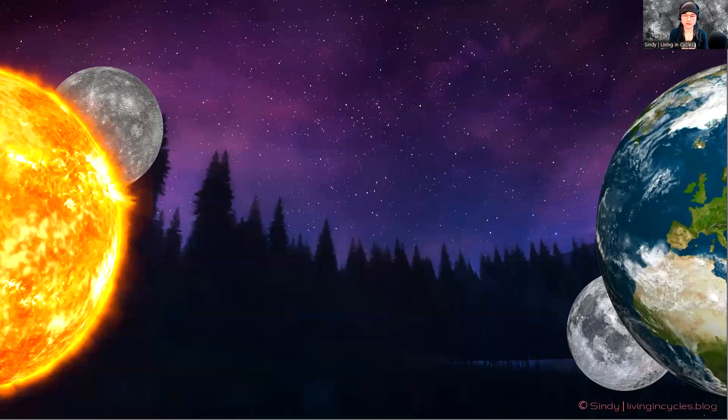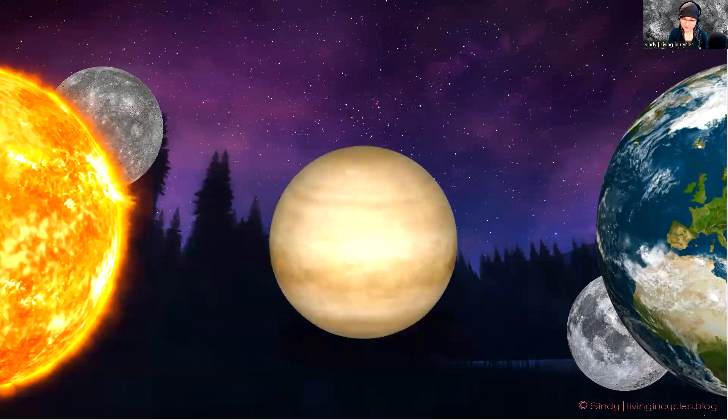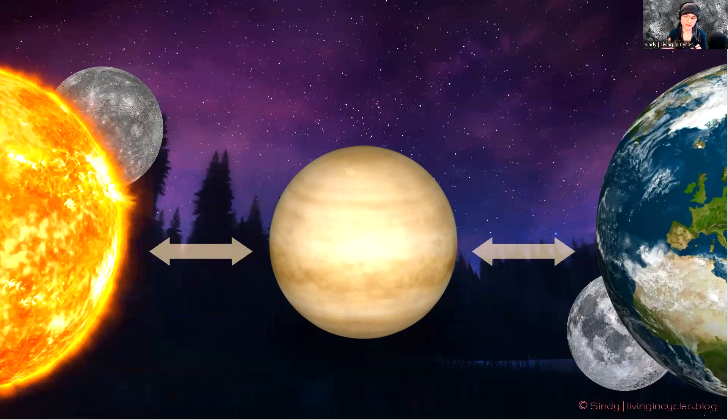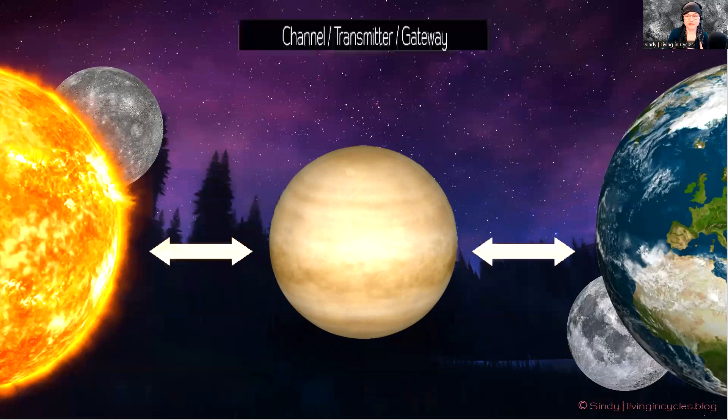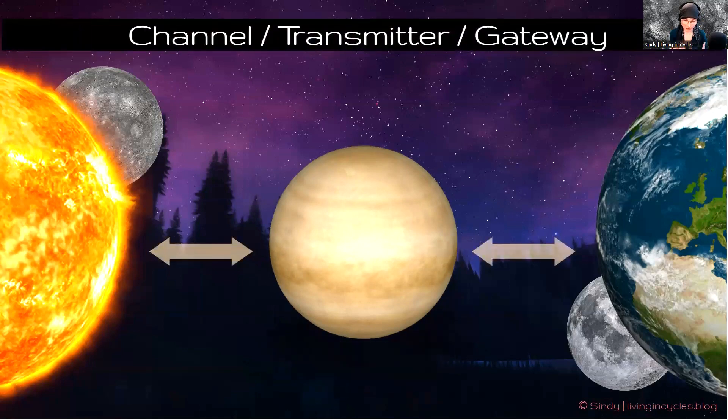Now think about what planet travels in between sun-Mercury and earth-moon. It's Venus. And I have come to understand Venus as kind of a bridge in between the pairs of sun-Mercury and earth-moon. So in a way Venus is like a channel, like a transmitter or a gateway.